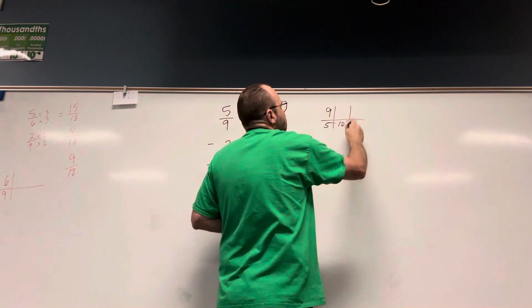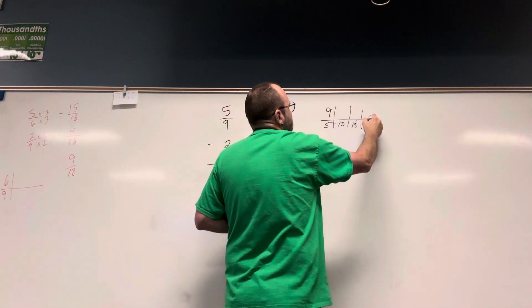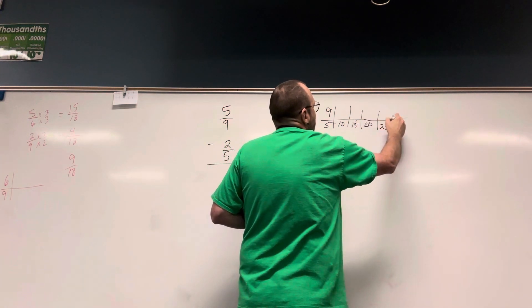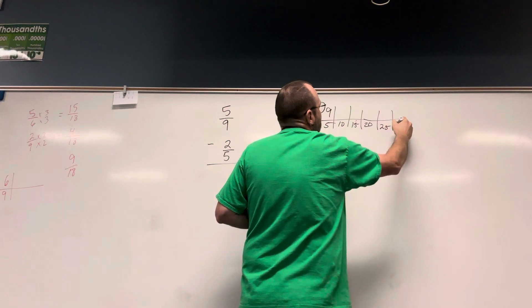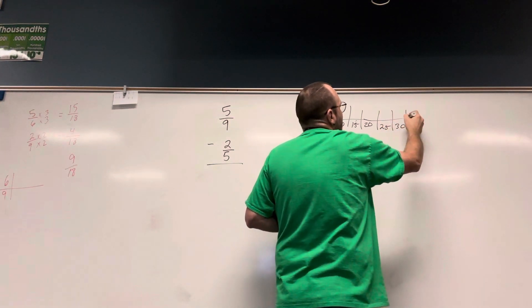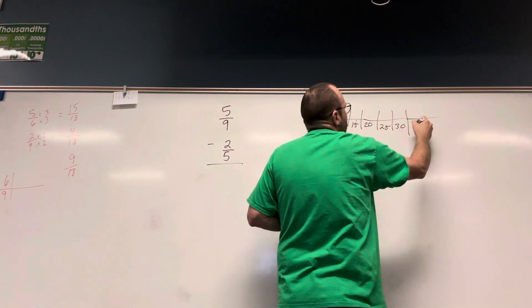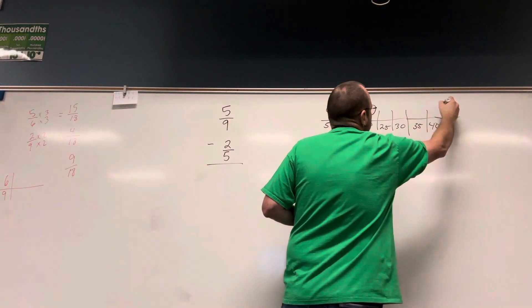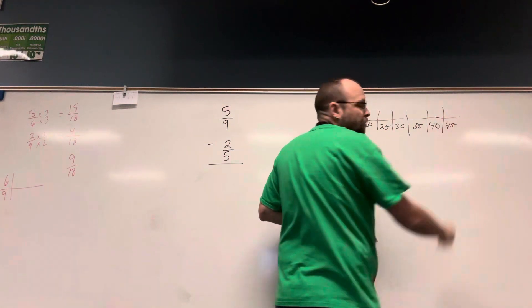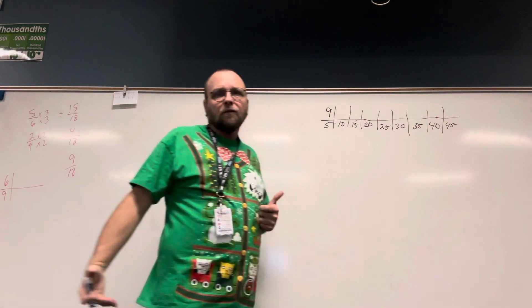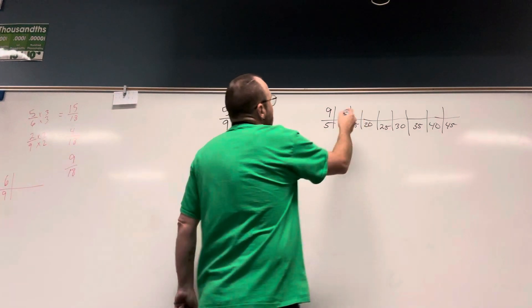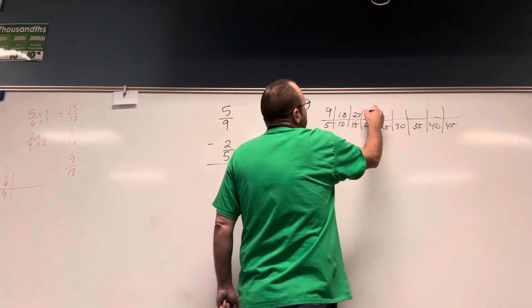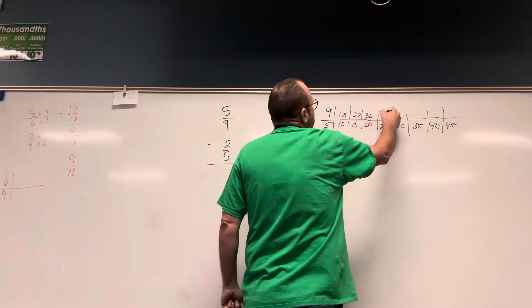Multiples of 5: 5, 10, 15, 20, 25, 30, 35, 40, 45. Multiples of 9: 9, 18, 27, 36, 45.